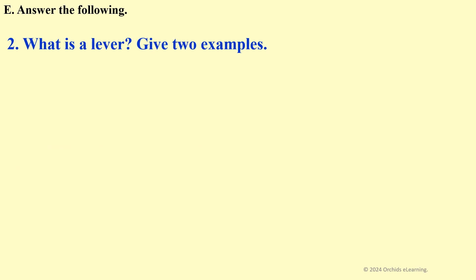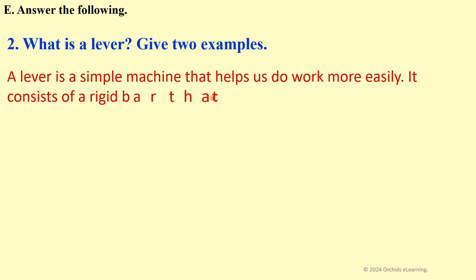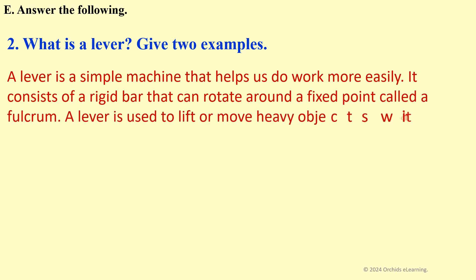What is a lever? Give two examples. A lever is a simple machine that helps us do work more easily. It consists of a rigid bar that can rotate around a fixed point called a fulcrum. A lever is used to lift or move heavy objects with less effort.